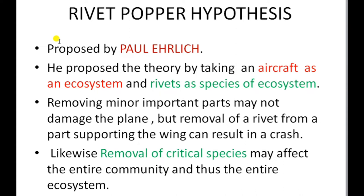A rivet is nothing but nuts and bolts. However, removing the rivets from an important part supporting the wing region of the airplane can result in a crash. So the ultimate result is a crash of the aircraft. Likewise, removal of critical species from the ecosystem may damage the entire ecosystem.